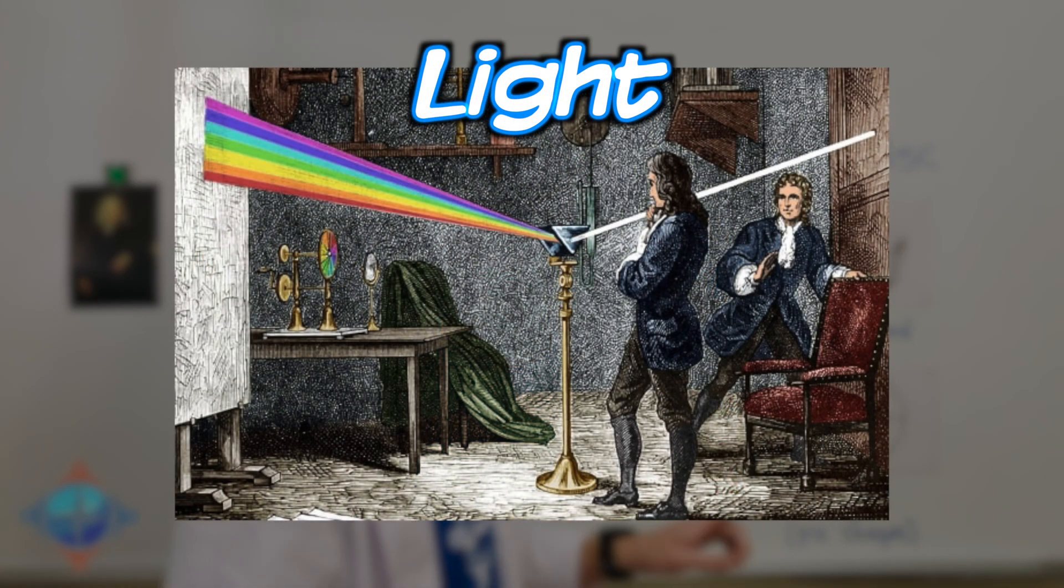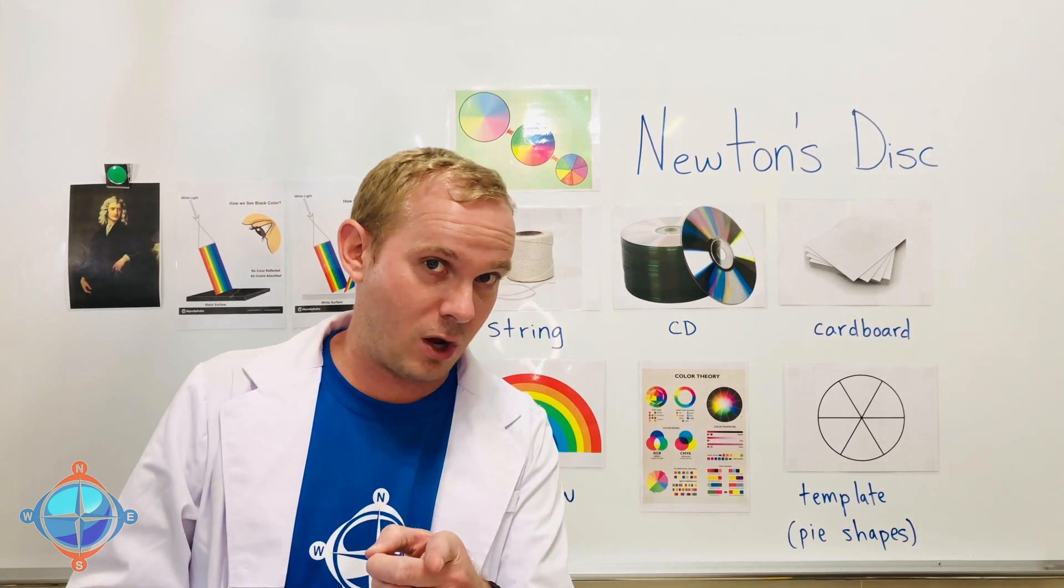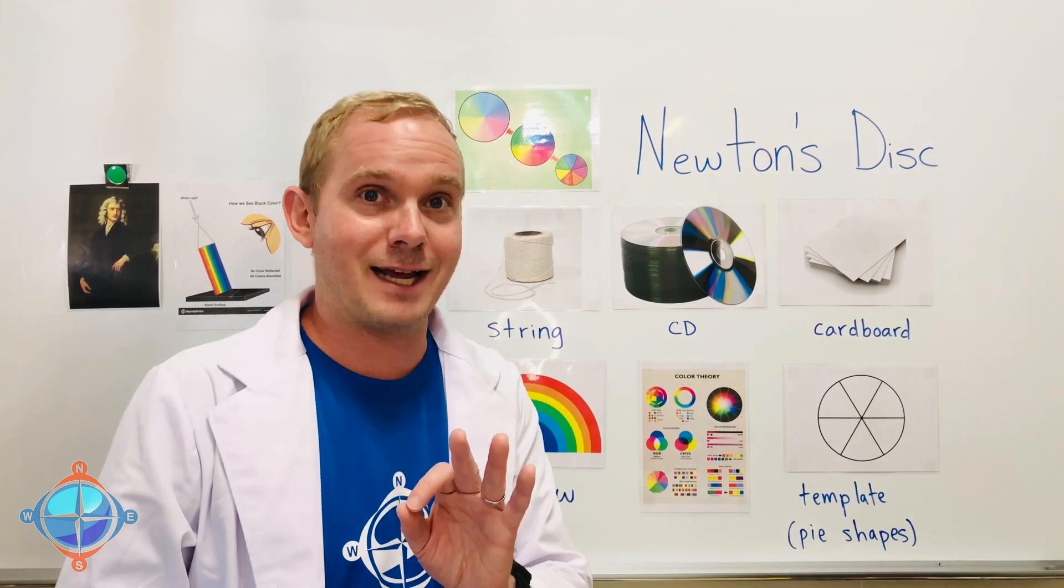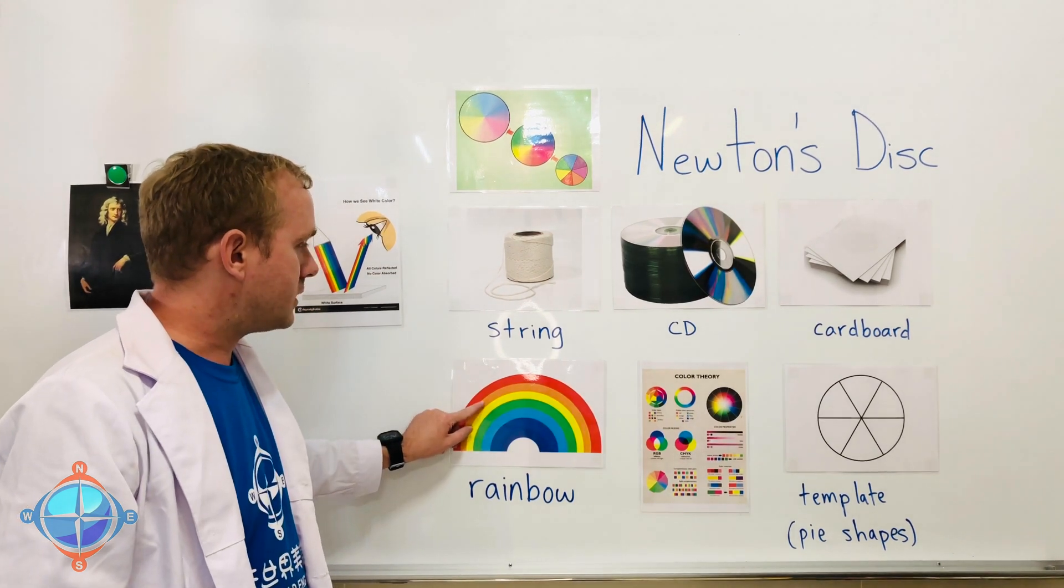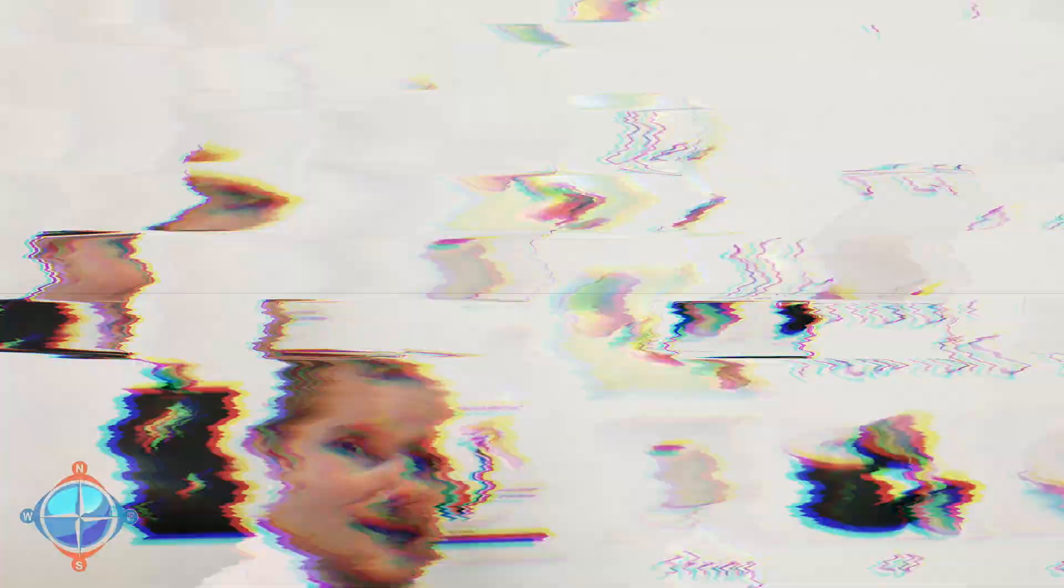We know that it has the colors of the rainbow inside. Do you know all the colors of the rainbow? It always goes like this: red, orange, yellow, green, blue, indigo, and violet.